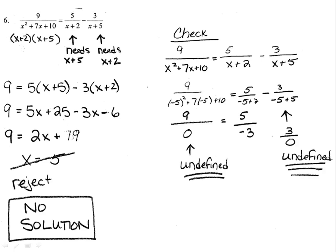Let's see how you did. We began by factoring each of the denominators and found that the first one is x plus 2 times x plus 5, and the other two did not factor. The second fraction needs an x plus 5, and the third fraction needs an x plus 2. Once I did that, I wrote my equation 9 equals 5 times x plus 5 minus 3 times x plus 2.